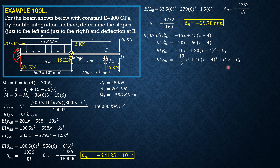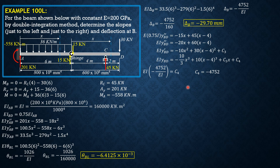When x equals 0, y_BD equals the deflection at B, which is negative 4752 over EI. Substituting x equals 0, all other terms vanish, so C4 equals negative 4752. This confirms C4 is negative 4752 over EI.